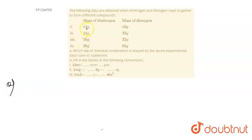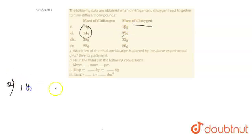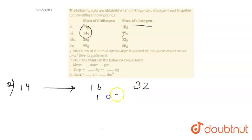Here we can see that if we are using 14 grams of dinitrogen, we are getting 16 and 32 grams of dioxygen. So with 14 grams of dinitrogen, we are using 16 and 32 grams. If we obtain their ratio — 16 ratio 32 — we get 1 ratio 2, which means it's in a whole number ratio.